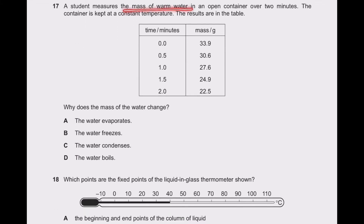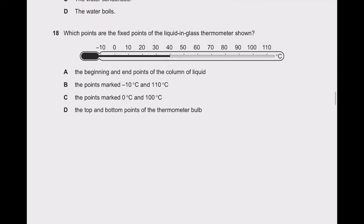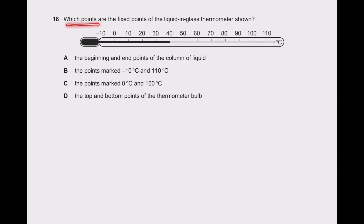Question 17: a student measures the mass of warm water in an open container over 2 minutes. The container is kept at constant temperature. Why does the mass of the water change? The water evaporates. The water freezes — no; condenses — no; boils — no. The mass decreases because the water is evaporating.